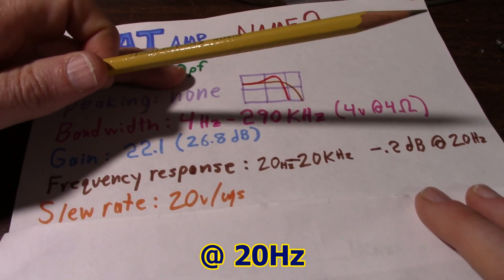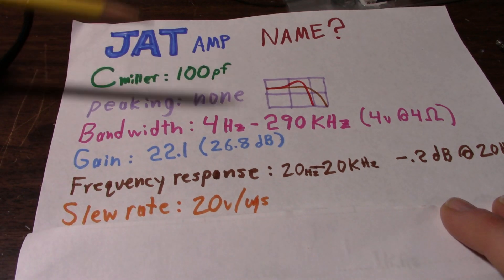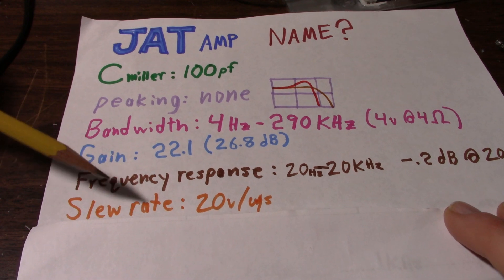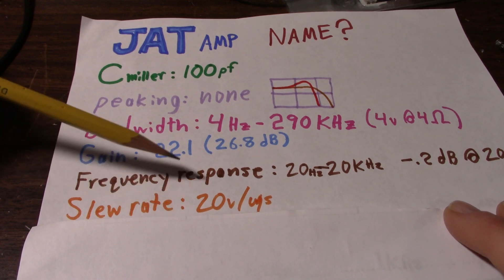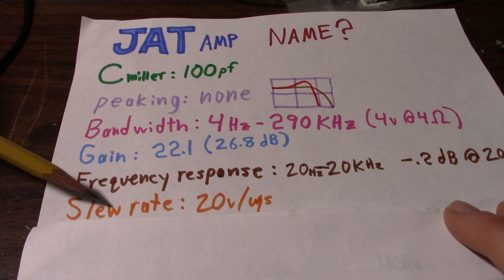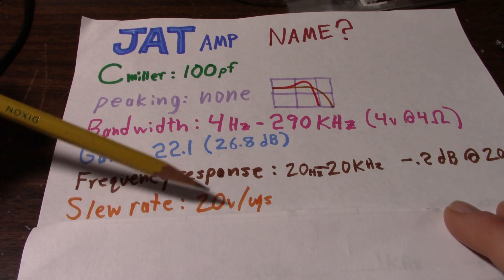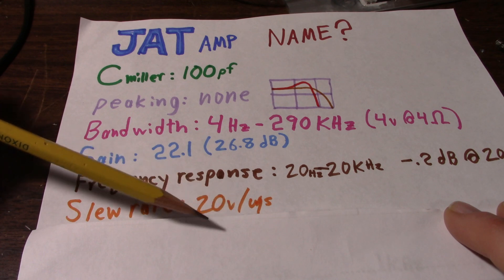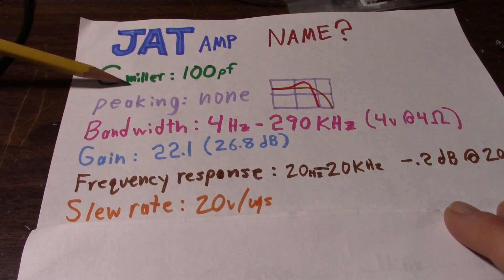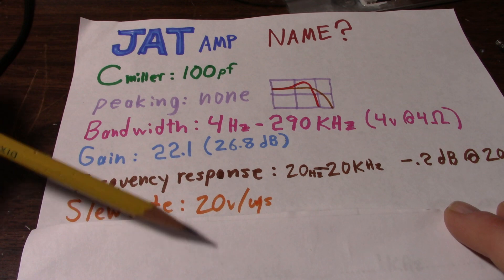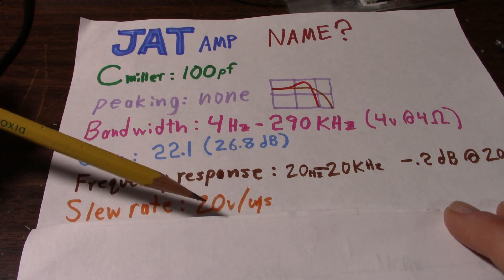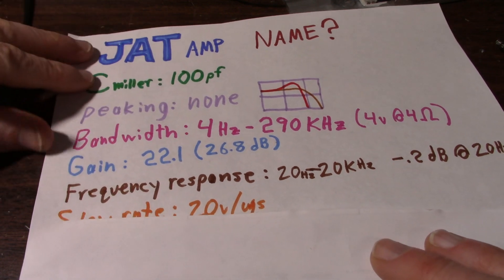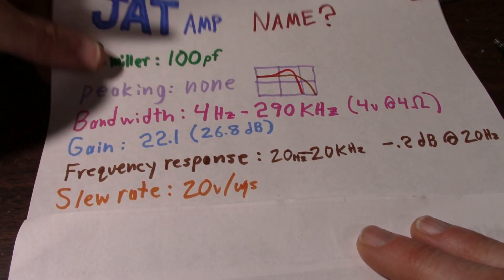Slew rate, talked about that in a previous video, where it was only at 10 volts per microsecond, and I wanted that to be a little bit faster, well not a little bit, but twice as fast. So I boosted it up to 20 volts per microsecond by increasing the current on the input stage. Because this Miller capacitor is what dictates what the slew rate is, depending on the current in the input stage. And I was running it too low, so I boosted that up.